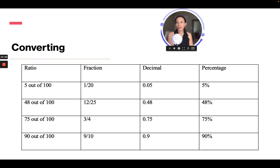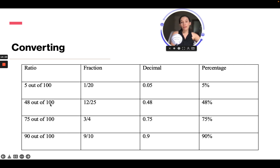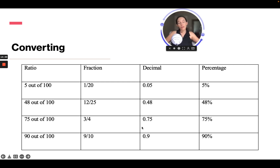Here's a nice conversion chart. A ratio of 5 out of 100 gives a fraction of 1 over 20, a decimal of 0.05, and a percentage of 5%. 48 out of 100 gives a fraction of 48 over 100, reduced to 12 over 25, a decimal of 0.48, and 48%. 75 out of 100 is 3 fourths — divide numerator and denominator by 25 — a decimal of 0.75 and 75%. And 90 out of 100 is 9 tenths, or 0.9 as a decimal, or 90%.